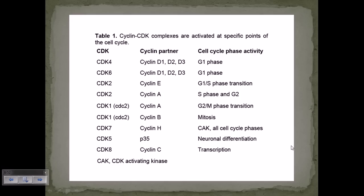This is a quick video about cyclins, CDKs, and the cell cycle phases where they become activated. Looking at a chart, we can see that during the cell cycle phases — G1, S, G2, and mitosis — we have different types of cyclin proteins. Cyclins are really important, and cyclin-dependent kinase proteins, called CDKs, work together with cyclins to control many different phenomena regarding the cell cycle.